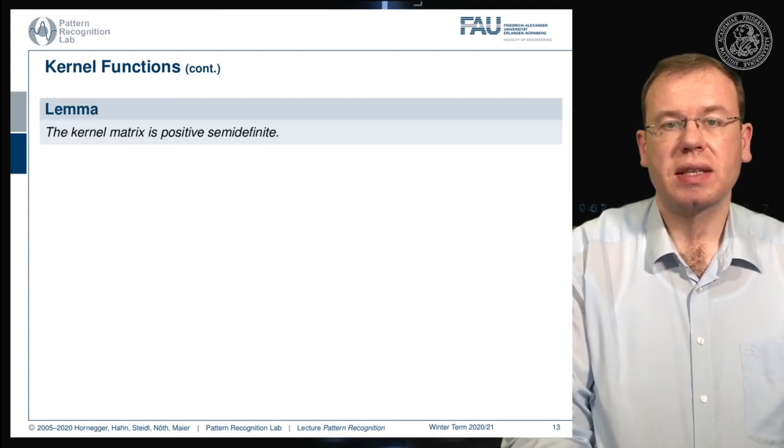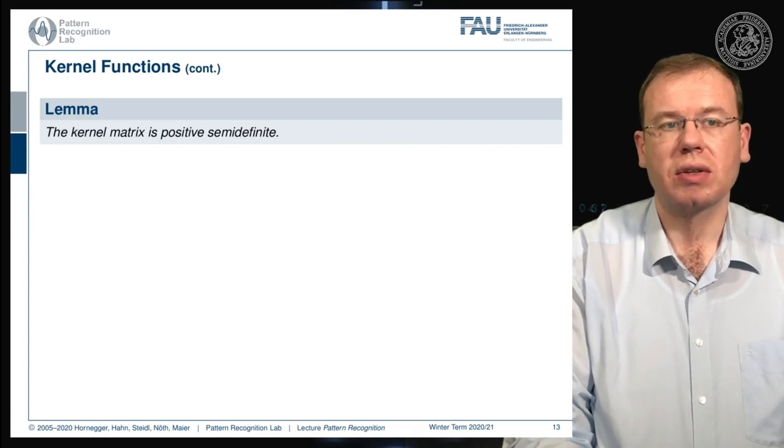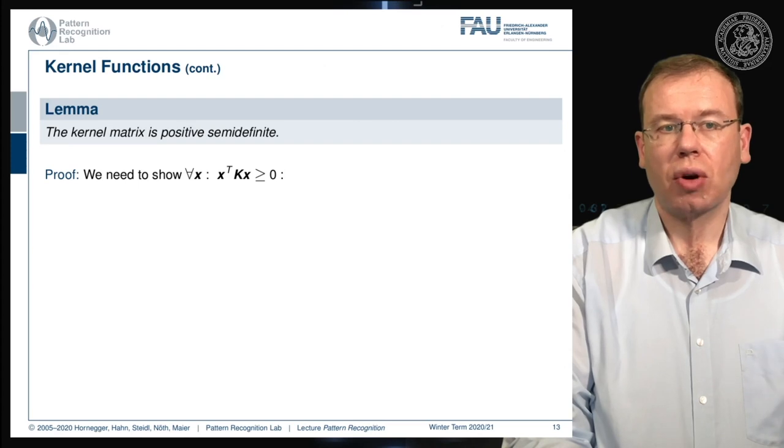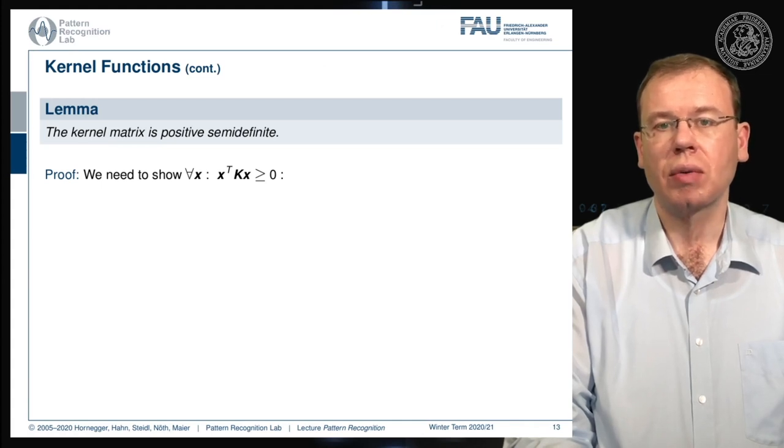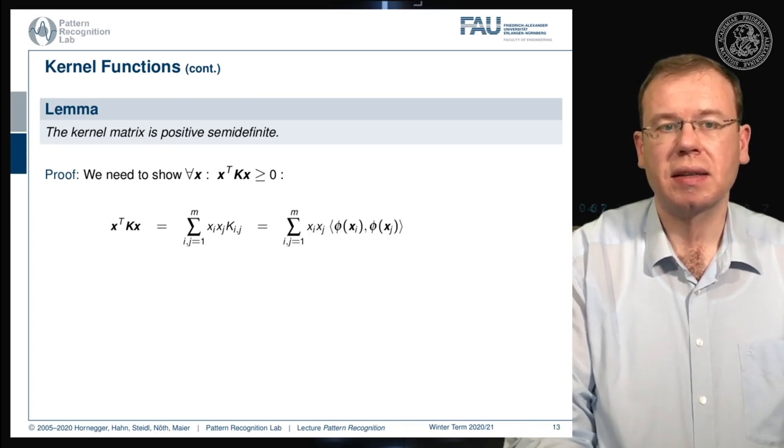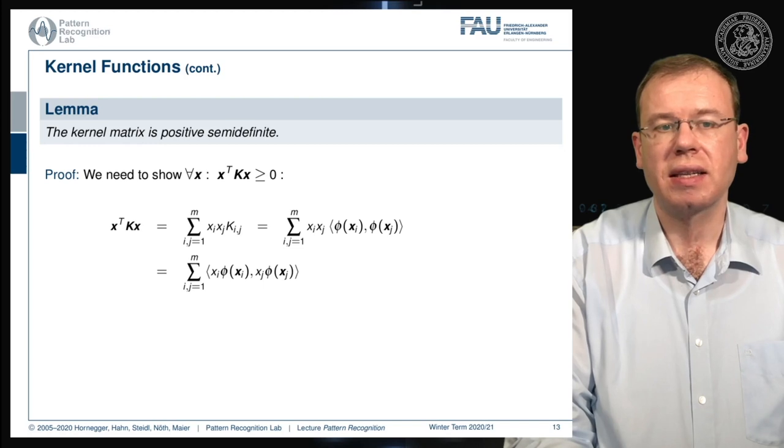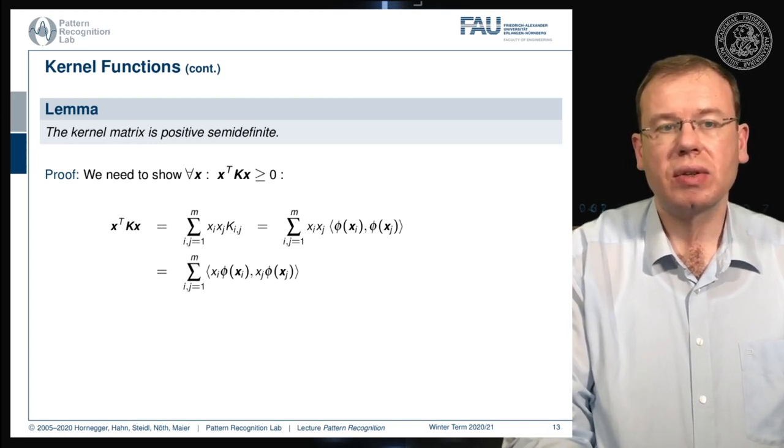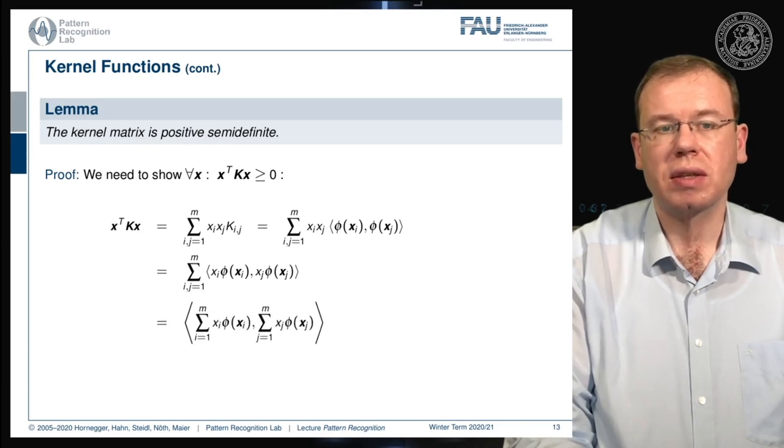This kernel matrix is positive semi-definite and we can actually also show this. We know that the property needs to be fulfilled for all x that x transpose k x is greater or equal to zero. Let's start with this, we can rearrange this and write it as a sum. We see that these are the entries of k i j multiplied with x i x j. The entry of k is simply the inner product of the feature transforms. This then means that we can bring in also the x i and the x j into this transform.